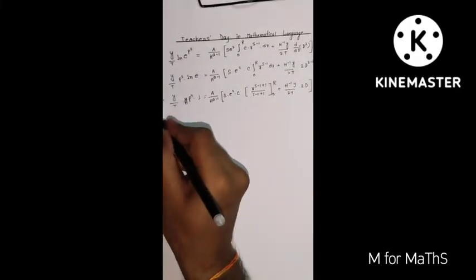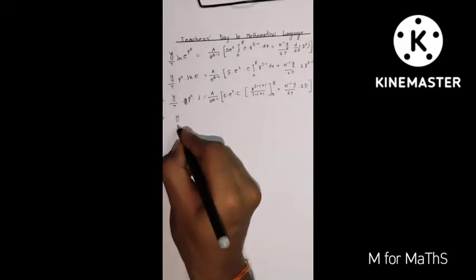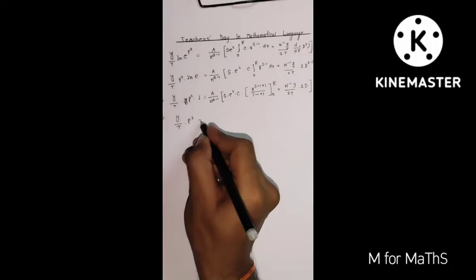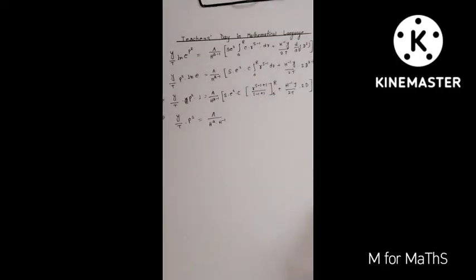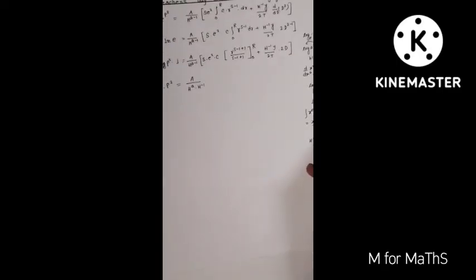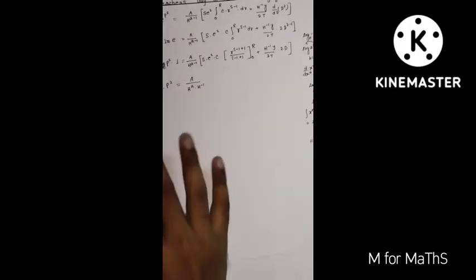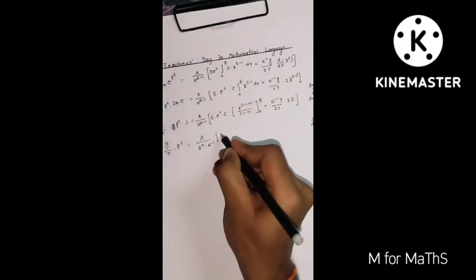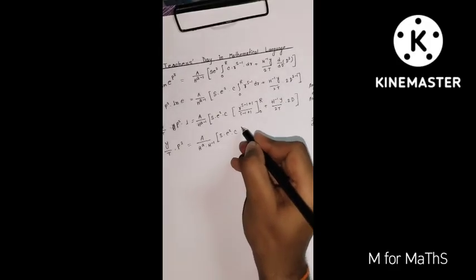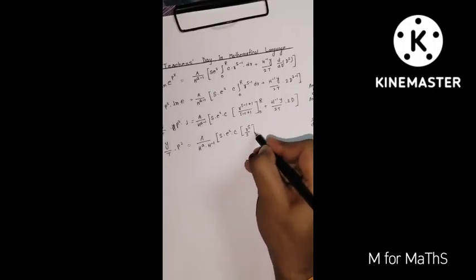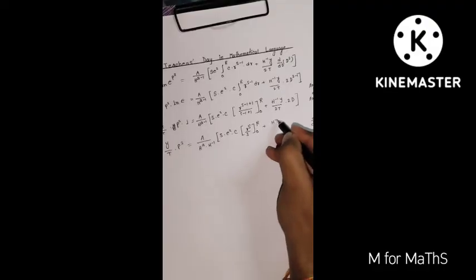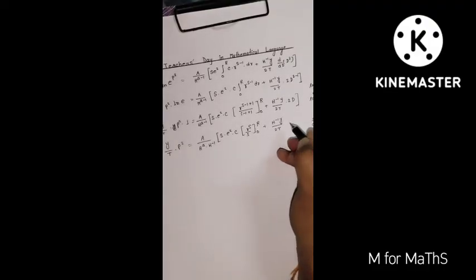So we get y by t times p-squared, times a by h to the power a times h to the power (minus 1) — using the indices formula: h to the power (a plus b) equals h to the power a times h to the power b, where b is minus 1. Then s, e-squared, c. Here you get r to the power s by s, evaluated from 0 to capital R, plus h-inverse times y by 2t times 2t — and the two and two cancel.